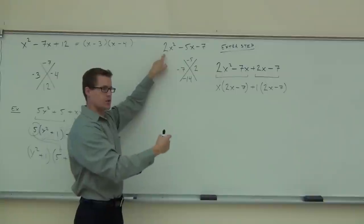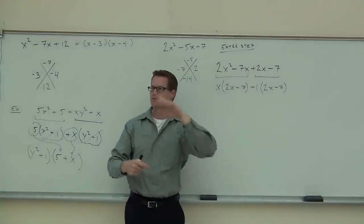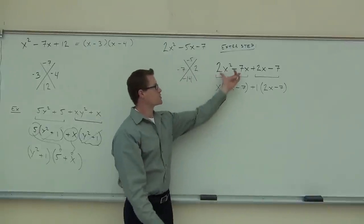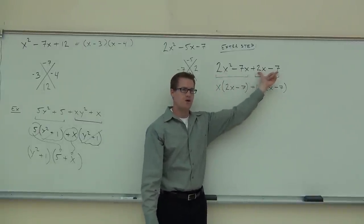So we have an extra step. We split up the middle term. This gives us four terms, which allows us to do factoring by grouping. We group the first two, we factor out an X. We group the second two. There's nothing to factor out besides a one.